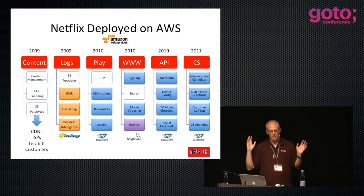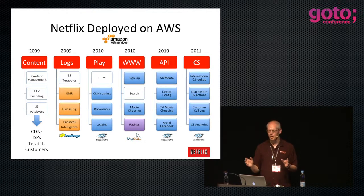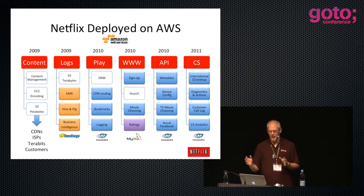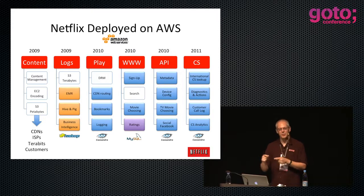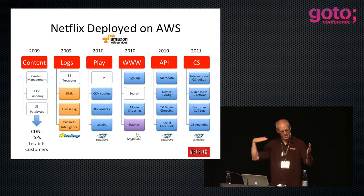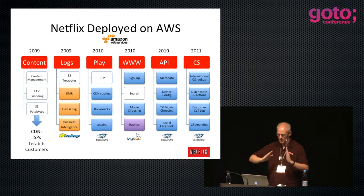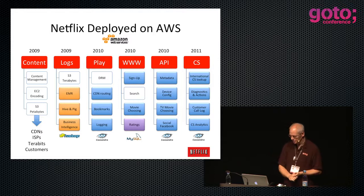We had slide decks with pictures of aircraft trying to take off and big explosions at the end of the runway. We had no backup plan - we were not going to build another data center. We didn't have enough capacity to run the website by end of year, and we were not going to build that capacity. You have to make it work in the cloud before the end of the year. Just before Christmas, we got the last service out of the data center. That really got everybody's attention and focused on making it happen.